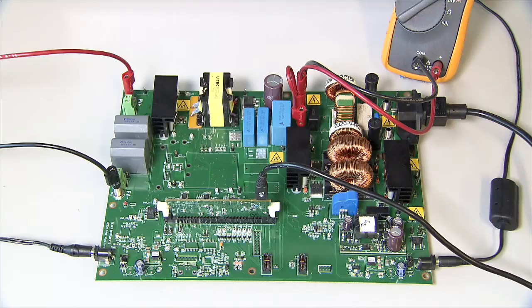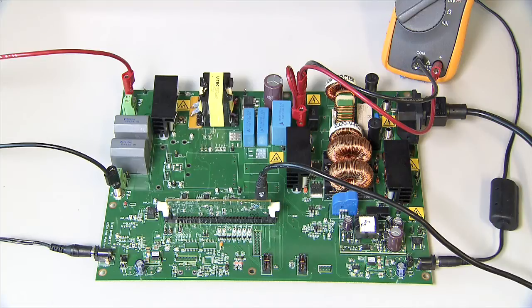To emulate the grid, an AC source is connected at the output. A resistive load is also connected at the output to ensure power is not fed back into the AC source. The oscilloscope is used to measure the grid voltage and the microinverter current that is fed into the emulated grid.